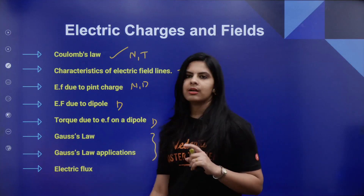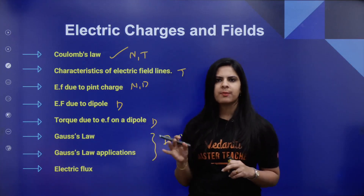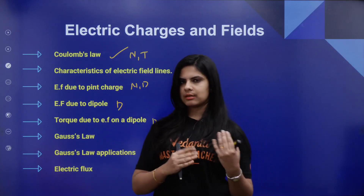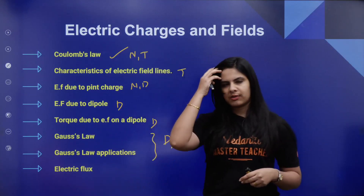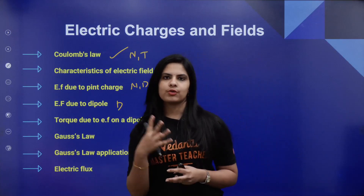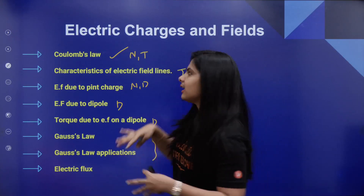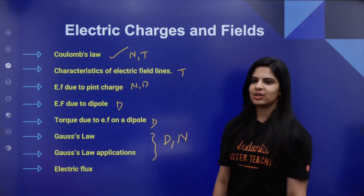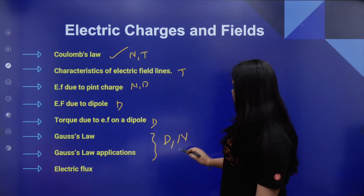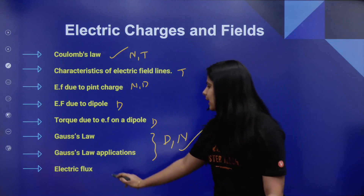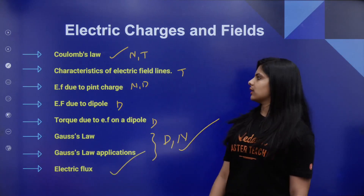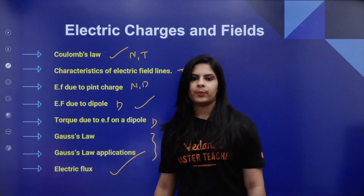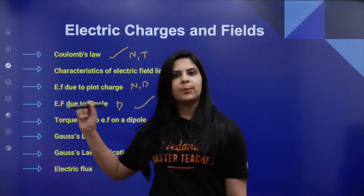In this chapter we are going to expect 4 to 6 marks. I think Coulomb's Law is mandatory. That is, Gauss's Law and its applications. Electric flux is mandatory. Also, electric field due to a dipole — this is important.